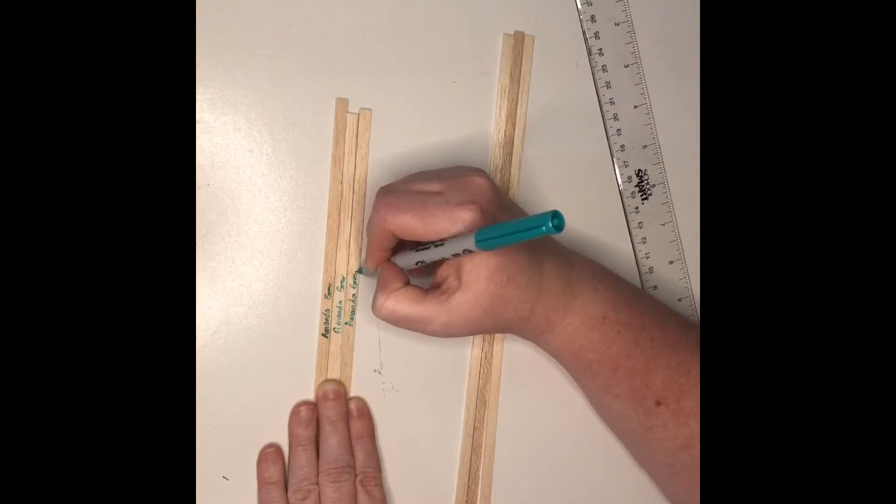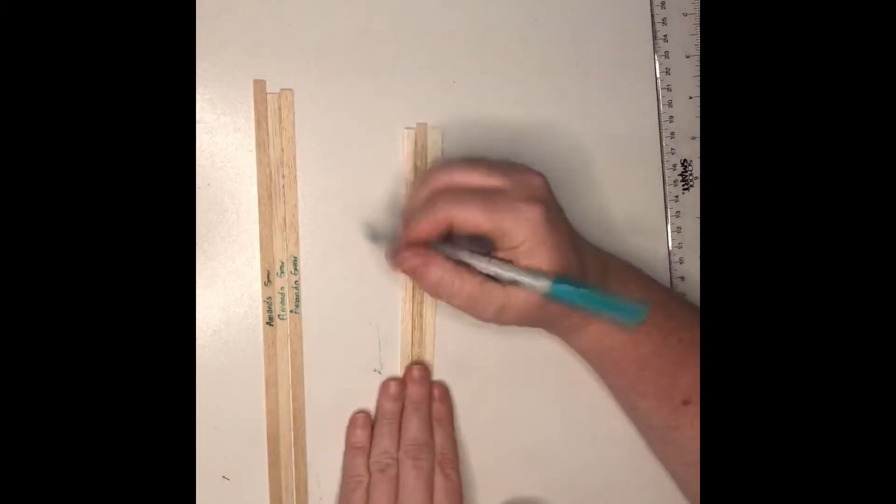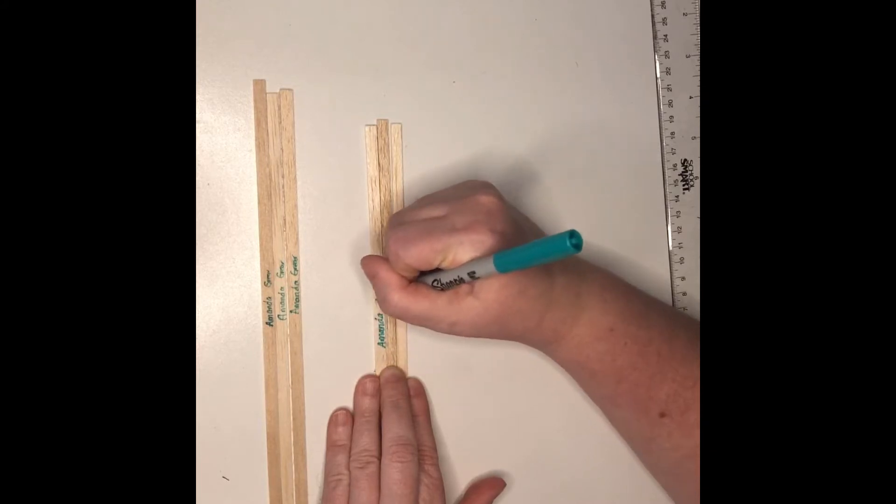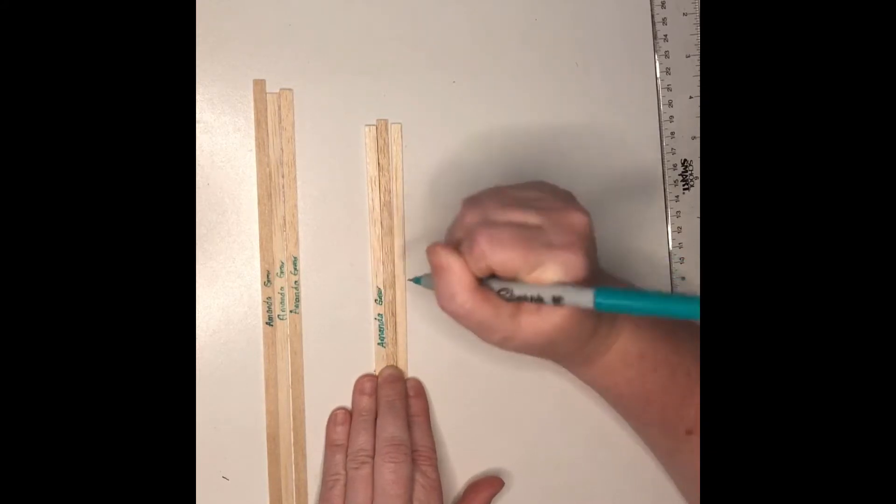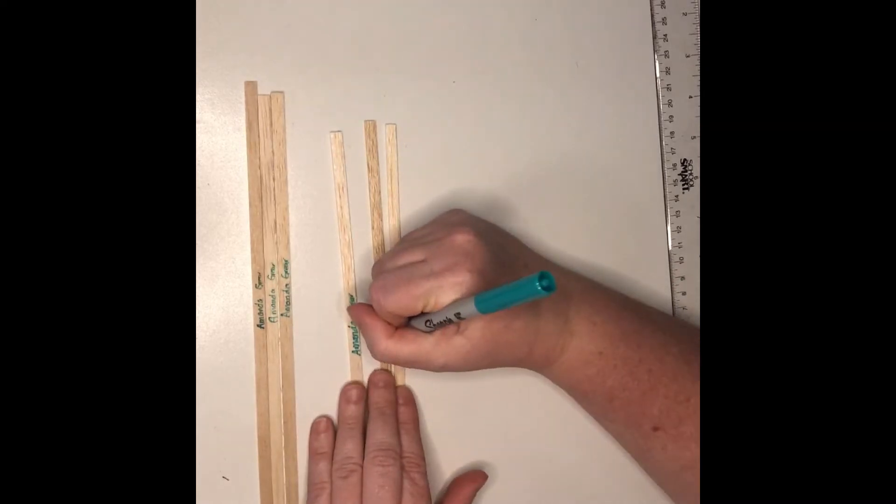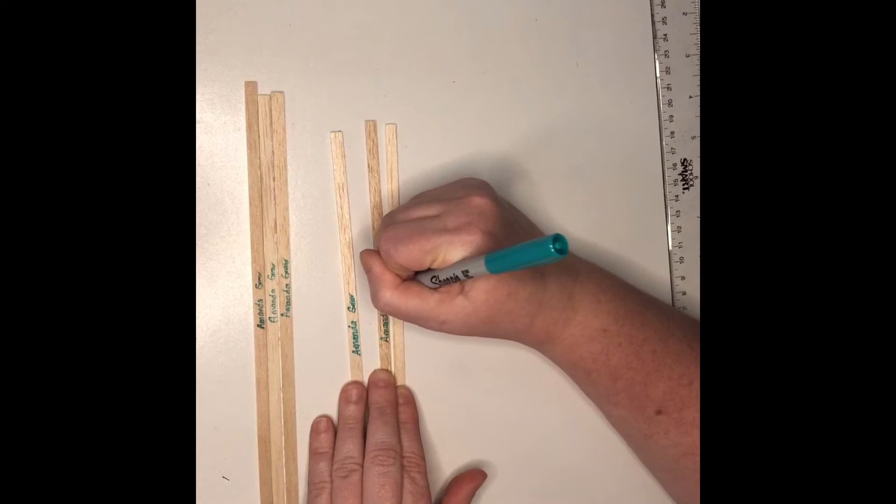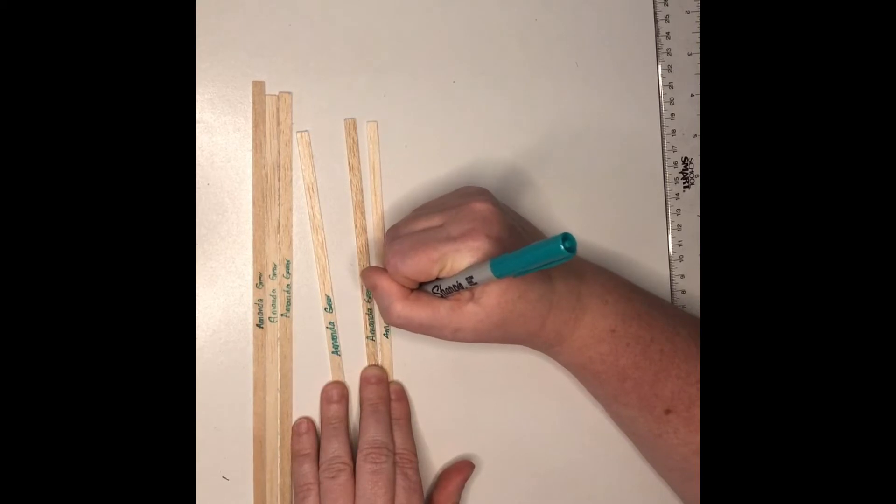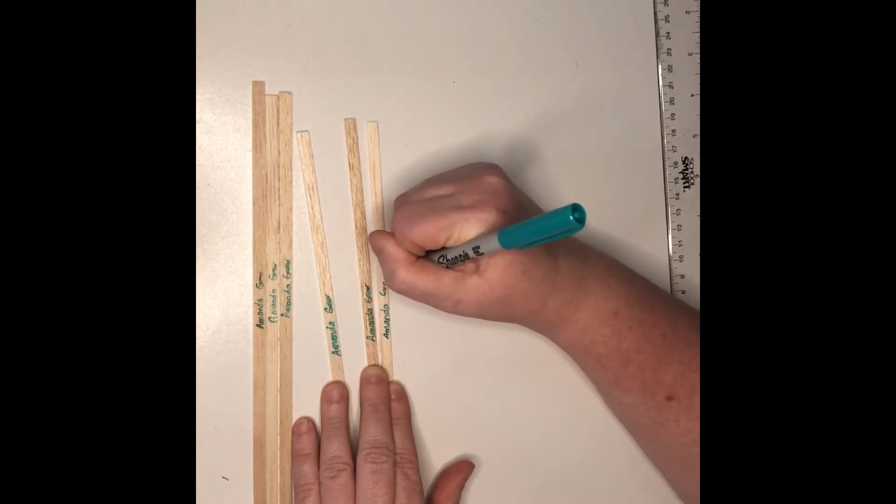There are Sharpies, markers, and pens. Pencil is really kind of hard to read on the wood, and you don't want to push into the wood, so I'm very gently lightly writing.